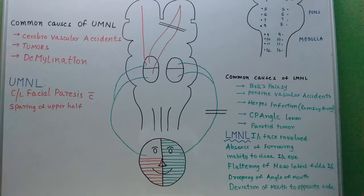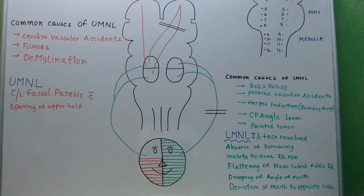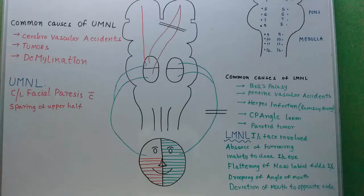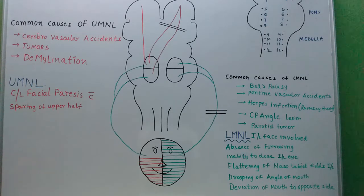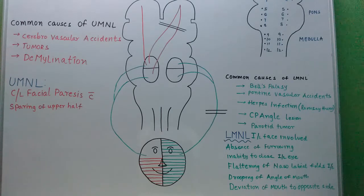What are upper motor neurons? The intracranial portion of the nerve proximal to the nucleus are upper motor neurons. What are lower motor neurons? The portion of nerve or neuron from its nucleus forms the lower motor neuron — that is, it involves the nucleus and the peripheral nerve. These two definitions are very important to understand.